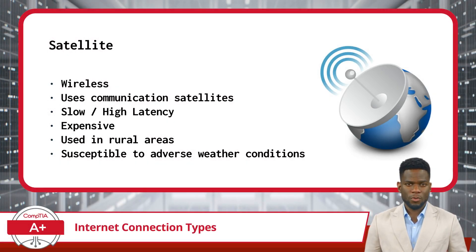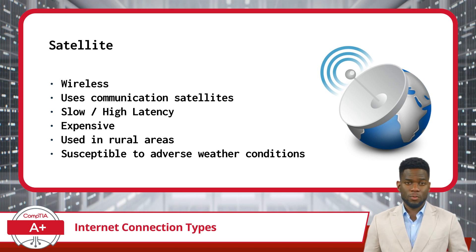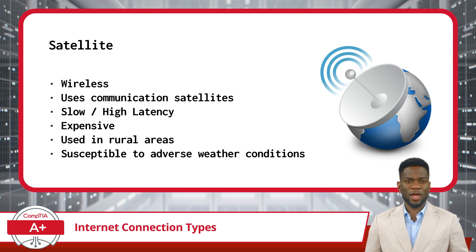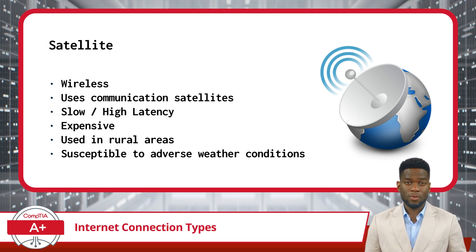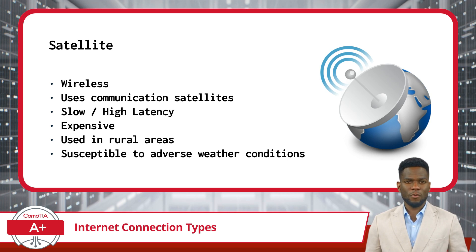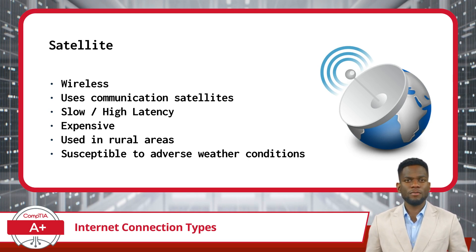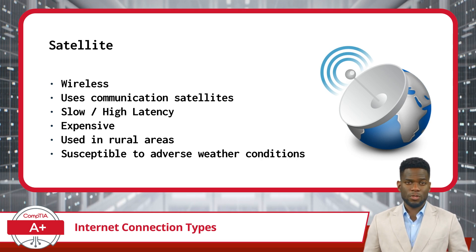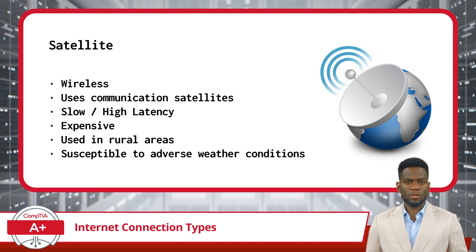Satellite Internet is a type of wireless Internet connection that uses communication satellites and satellite antennas to provide Internet access. It is a viable option for areas where traditional wired connections like fiber optic, cable, or DSL are not available, usually due to a lack of existing infrastructure. While satellite may be your only option in a remote location, it is probably going to be expensive and slow. Satellites are positioned approximately 35,000 kilometers above the Earth's surface, causing data latency as radio signals travel up and back. Bad weather like rainstorms can further interfere with signals.